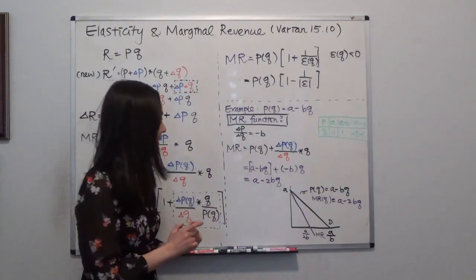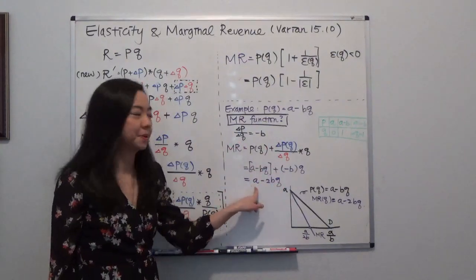I didn't change anything here. And when you expand that, you will get a minus 2bQ.